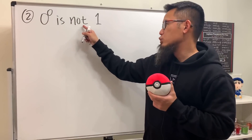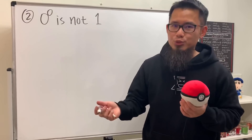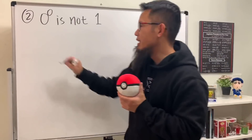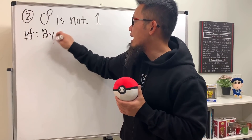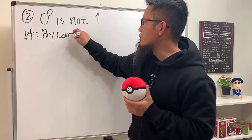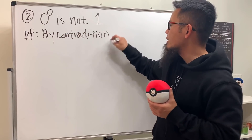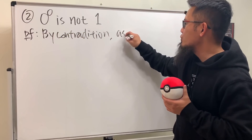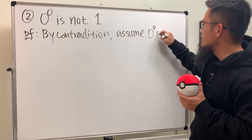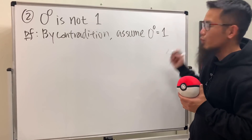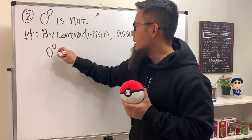For the second proof, the statement is: zero to the zero is not equal to one. Because we have the word 'not,' we'll use contradiction again. Assume that zero to the zero is indeed equal to one.